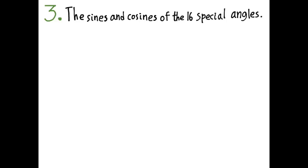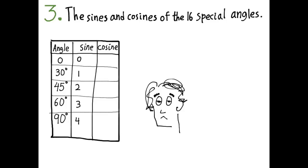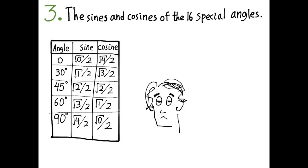Number three: the sines and cosines of 16 special angles. There's a story — once a kid was given a test where he had to write down the sines and cosines of these angles and realized he hadn't done his homework. After panicking, he decided to just write the numbers 0, 1, 2, 3, 4 for sine, and then 4, 3, 2, 1, 0 for cosine going in the other direction. To make it look more complicated, he put a square root over all the numbers, and then drew 'over 2' for all of them. When he got his paper back, he discovered he got everything completely right.